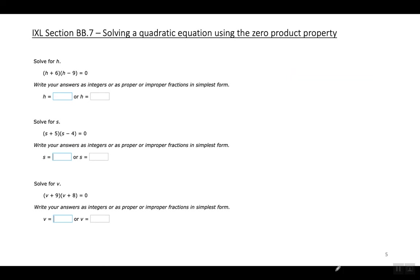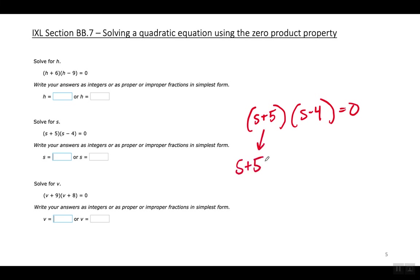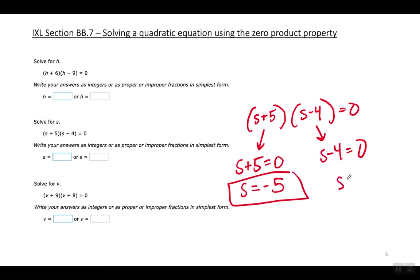Second example: S plus five times S minus four equals zero. Set each factor equal to zero and solve for S — S equals negative five and S equals positive four.